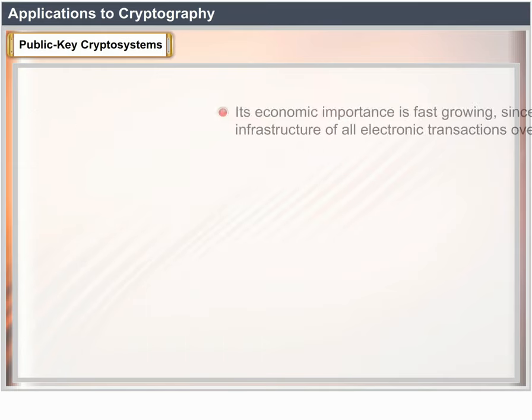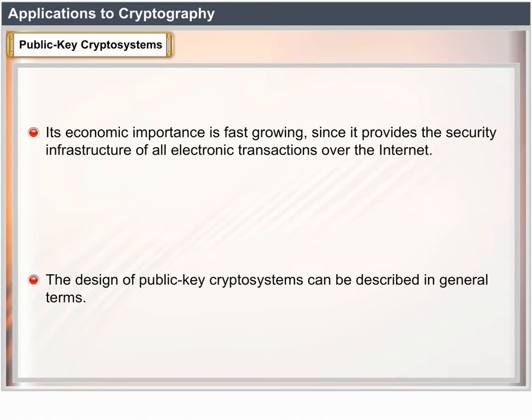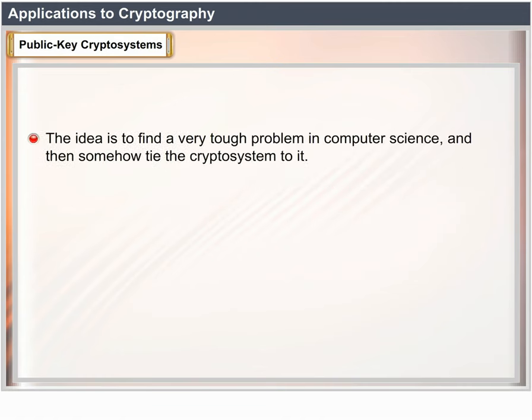Given an electronic message from Bob to Alice, how can we prove that Bob actually sent it? Bob can apply his decryption procedure to some signature message M. Any other party can then verify that Bob actually sent the message by applying the public encryption procedure E, since only Bob knows the decryption function. Public key cryptography is the basis of modern cryptography. Its economic importance is fast-growing, since it provides the security infrastructure of all electronic transactions over the internet.